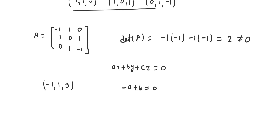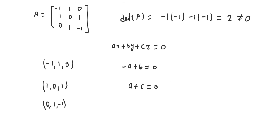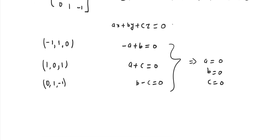Similarly, for the second vector 1, 0, 1, we get the equation A plus C equals 0, and for the third vector 0, 1, minus 1, substituting these values we get B minus C equals 0. If we solve these three equations, we get A equals 0, B equals 0, C equals 0. That means there is no plane which passes through these three vectors. Similarly, we can prove there is no line which passes through these three vectors either.